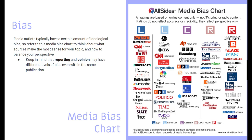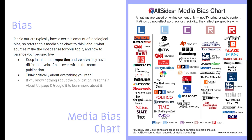Here is an example from the media bias chart: NPR News gives a very center news report — that's their reporting — whereas NPR opinion pieces lean a little bit more to the left. Think critically about everything you read. If you don't know anything about the publication, read their About Us page and then Google the publication to learn more.